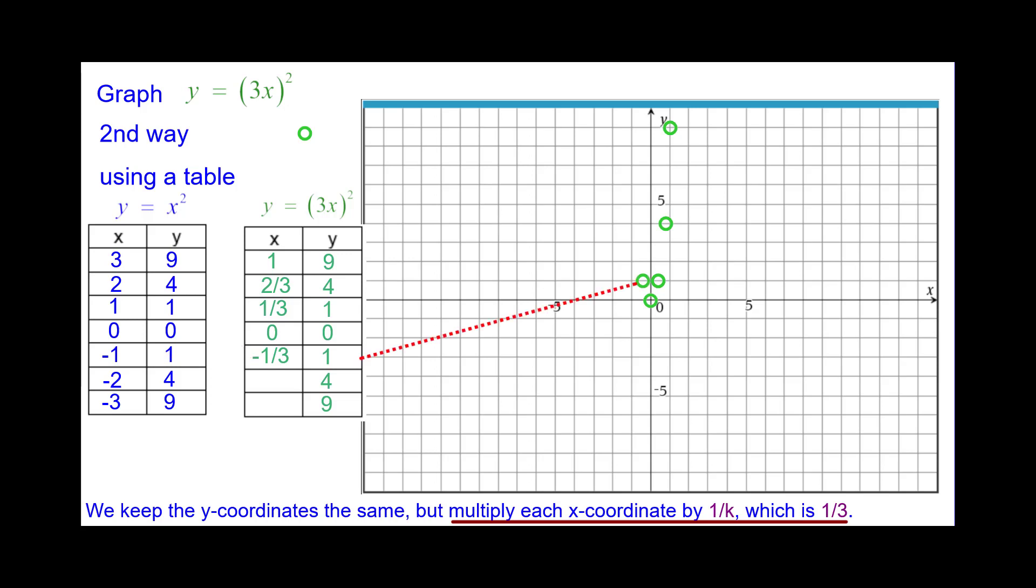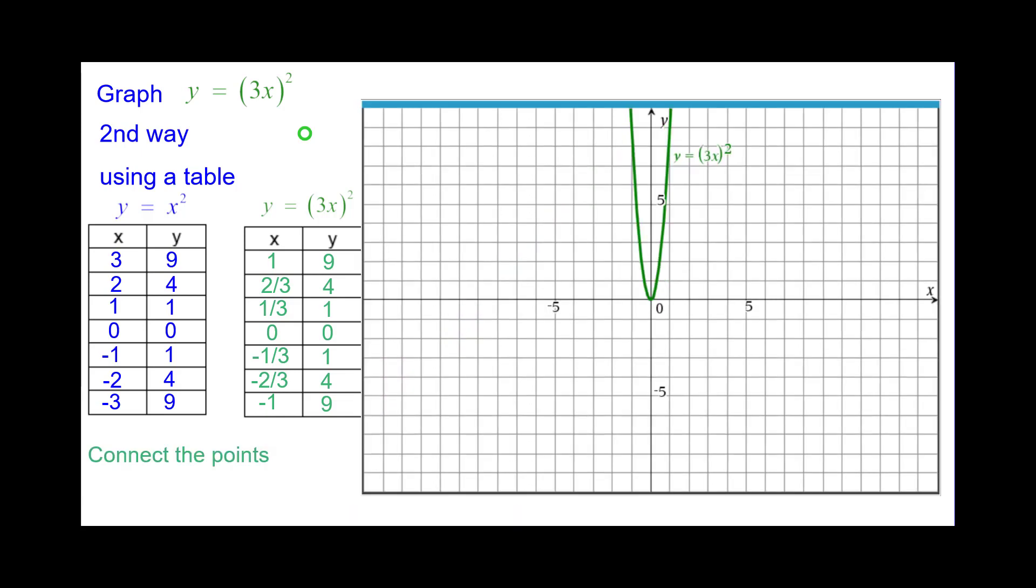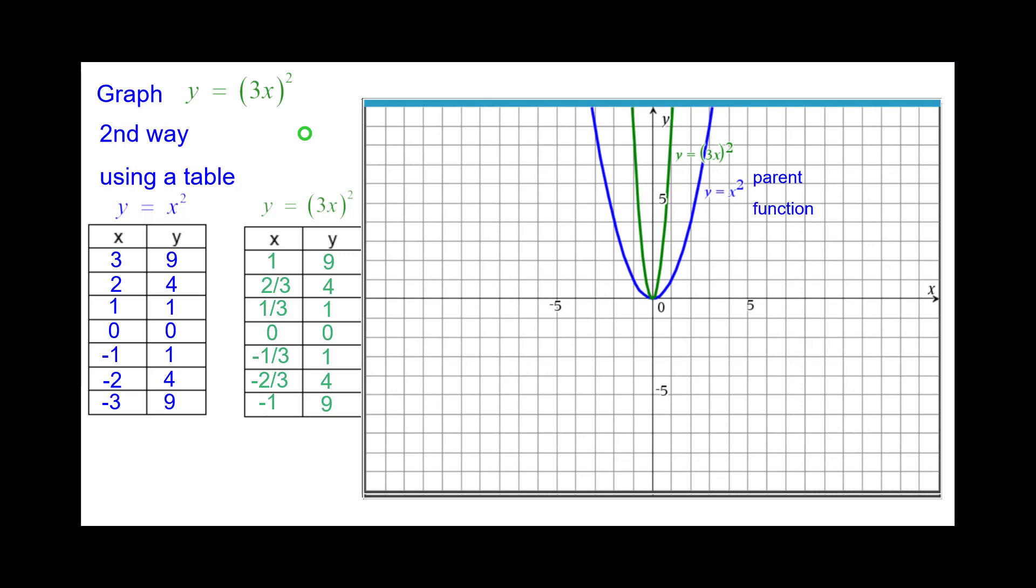Negative 1 third comma 1. Negative 2 thirds comma 4. Negative 3 thirds or negative 1 comma 9. Connect the points and then compare it to the parent function. Note again y equals the quantity 3x squared is equivalent to y equals 9x squared.